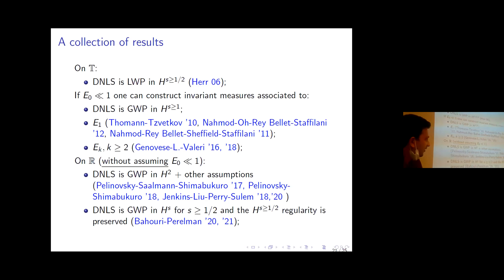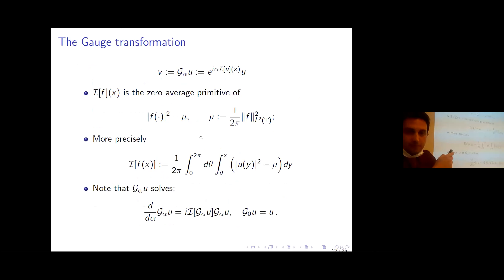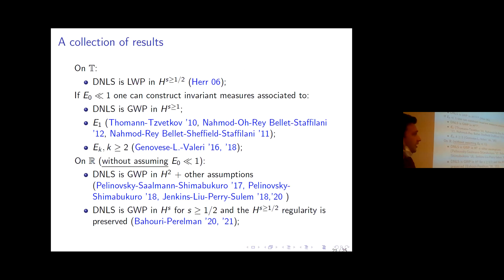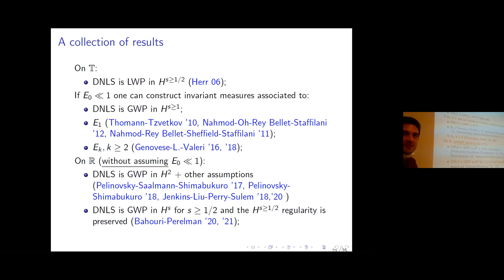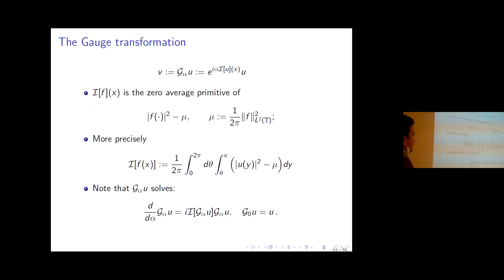One may now think the same can be proved in the periodic case — there is no reason to believe it should be false, and it is still open. It is also natural to ask whether invariant Gibbs measures associated to the conservation laws can be constructed without the small mass assumption. There is a useful tool: the gauge transformation.